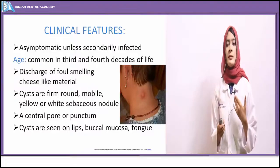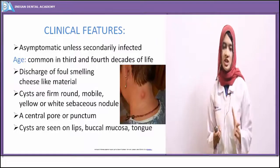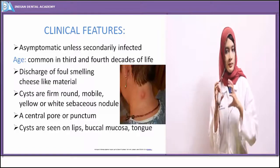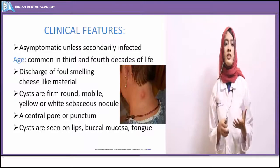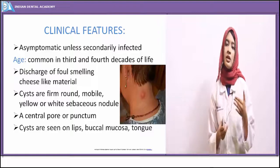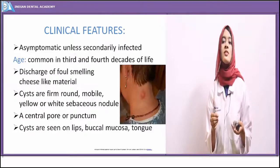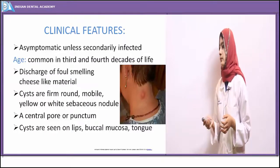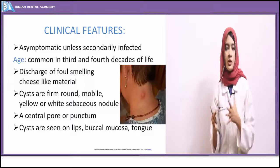Clinically, the cysts present as flesh-colored or yellowish-white nodules. The yellowish-white color indicates the presence of keratin. Cysts may be seen in the oral cavity — lips, buccal mucosa, and on the tongue, where they present as mucosal nodules embedded on the tongue surface. These cysts are more commonly seen in the third or fourth decade of life, though younger individuals also show presence of these cysts.